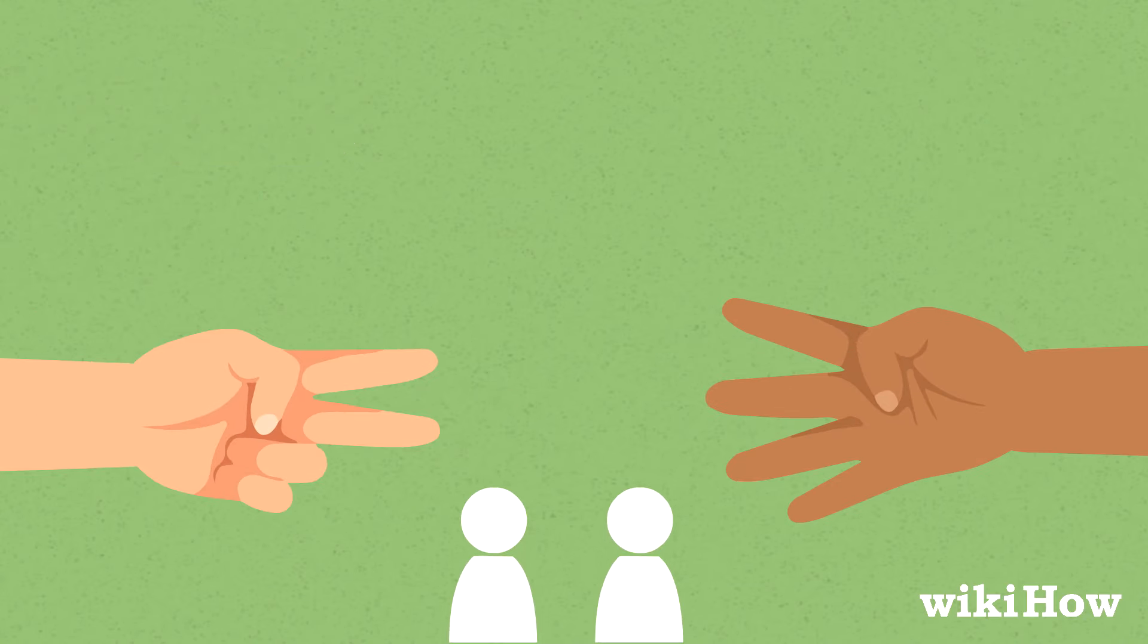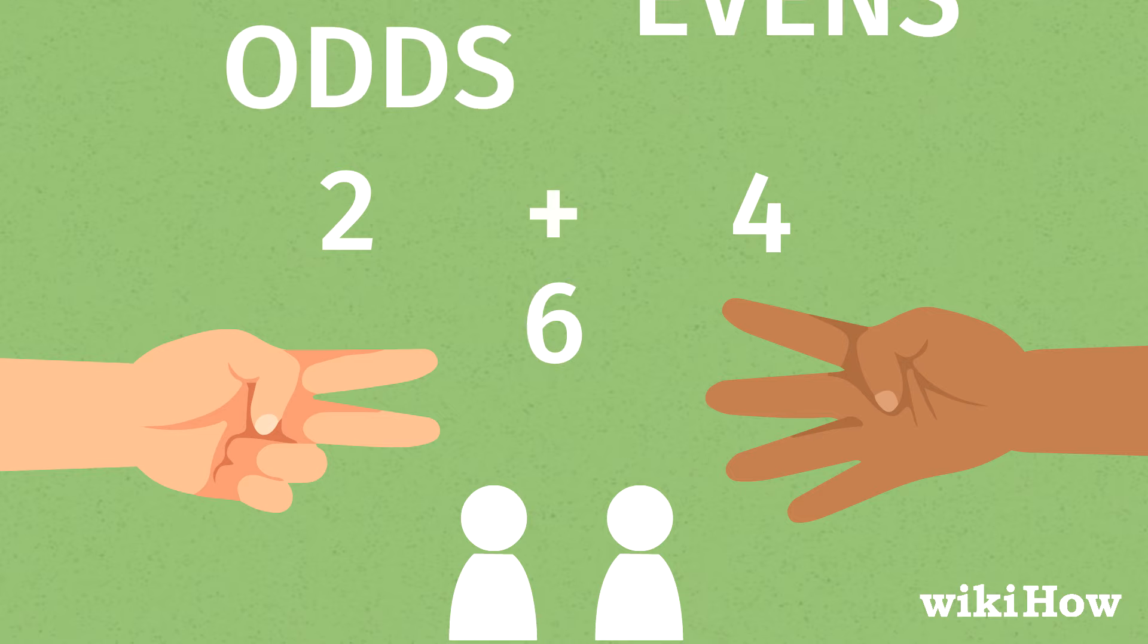Odds and Evens is an easy two-player game where players try to score the most points by winning as either odds or evens.